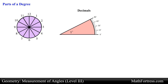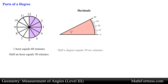Similar to the way we measure time where each hour is divided into 60 minutes — when we say half an hour we are referring to 30 time minutes — so when we say half a degree we are referring to 30 arc minutes. For example, an angle that measures 2.5 degrees can be expressed as 2 degrees 30 minutes, since 30 minutes represents half a degree.